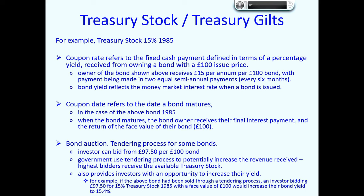The coupon date refers to the date when a bond matures. In the case of treasury stock 15% 1985, the maturity date is 1985. In the year of maturity, the owner receives their final interest payment and the return of the face value of their bond — £100. Some bonds were issued via a tendering process, an auction, where investors could bid from £97.50 per £100 bond.